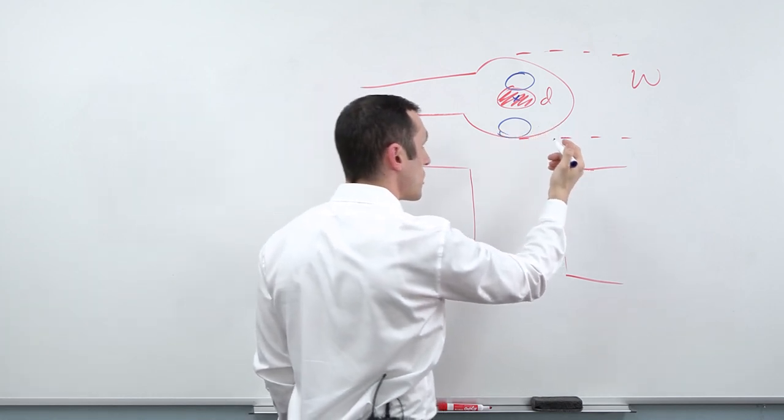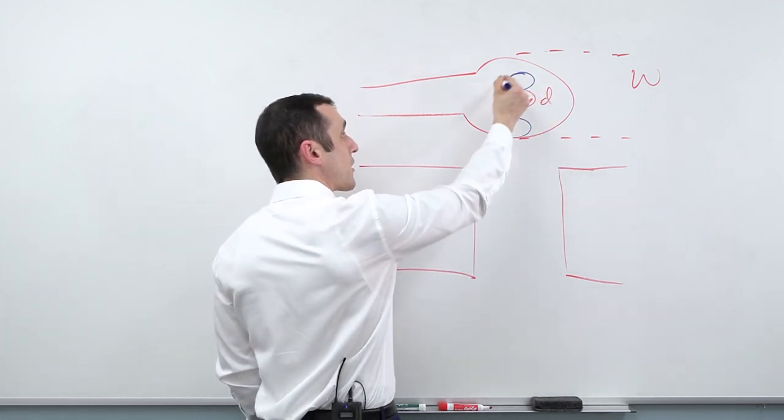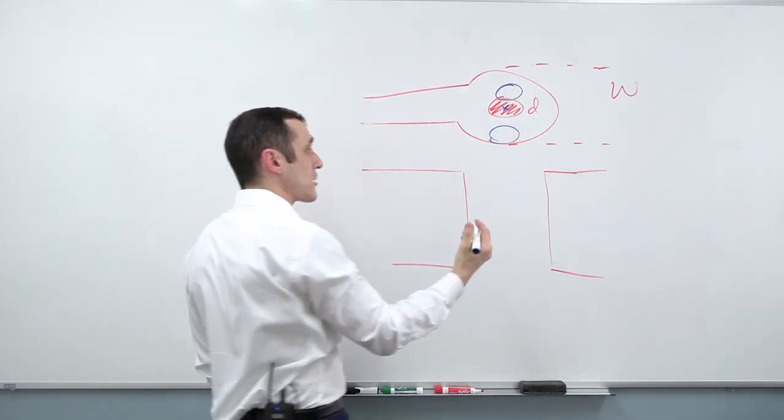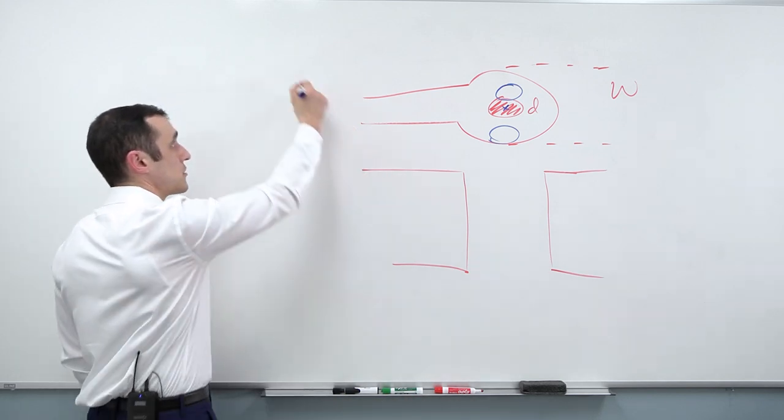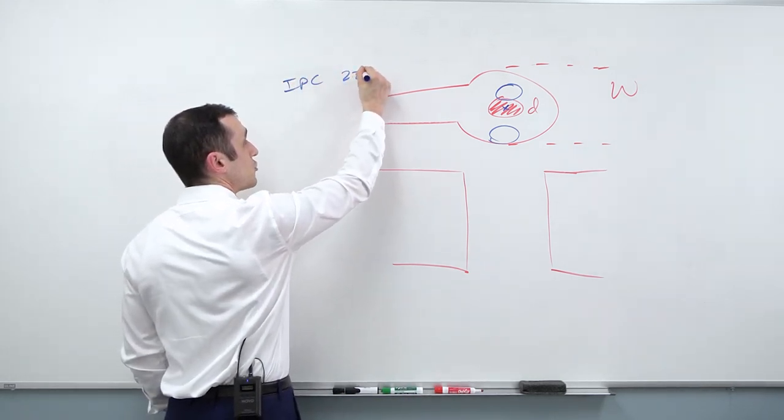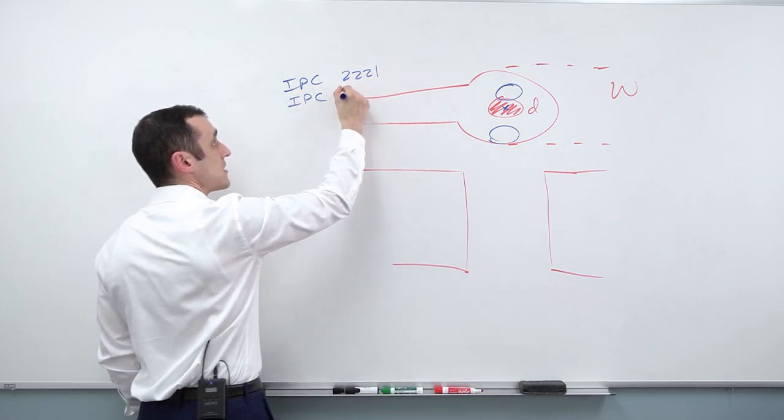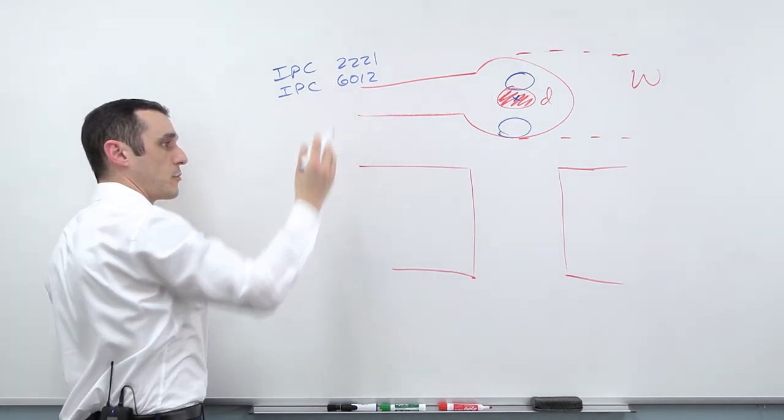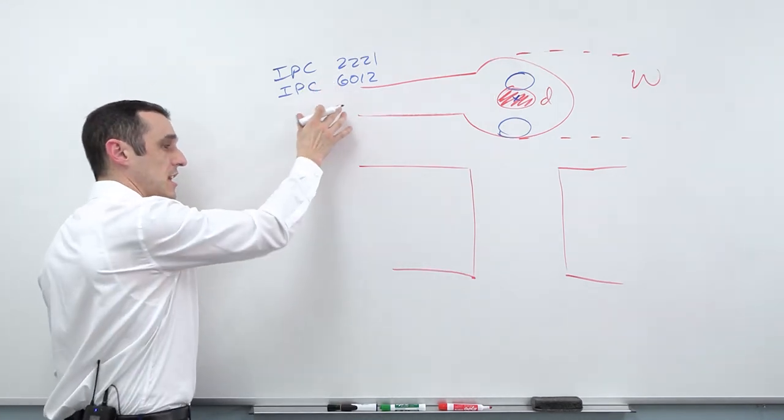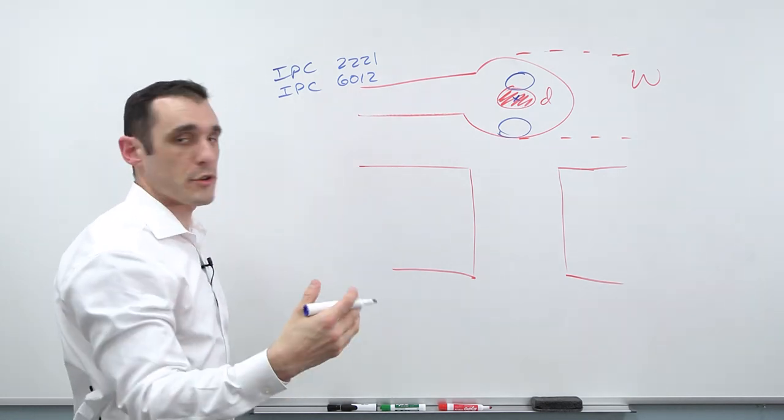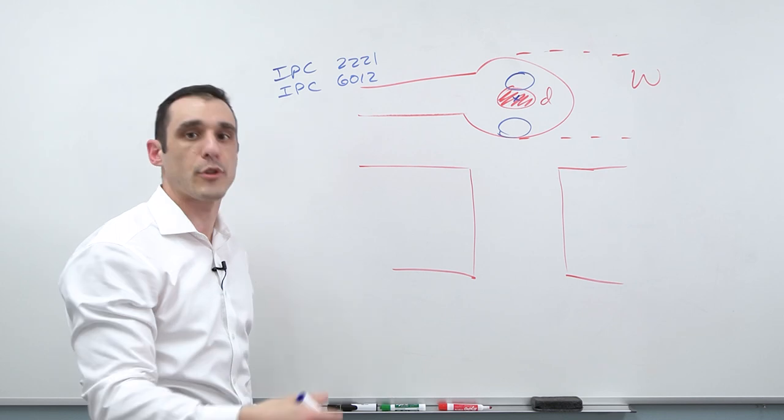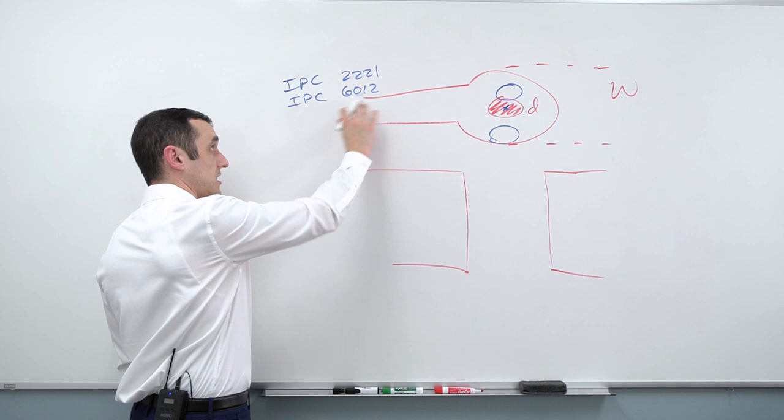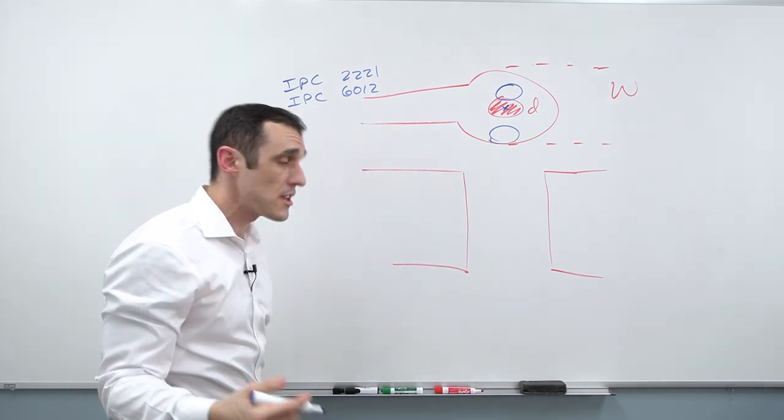One way to size your pads is to accommodate for this drill wander. And so what that does is that ensures that no matter where this drill is most likely to hit, you're always going to have a reliable electrical connection here. So this is actually defined in two IPC standards. Those are IPC 2221 and then IPC 6012. Now, 6012 is derived from 2221. 6012 applies to rigid boards. There are other standards that are related to different kinds of circuit boards. So for example, there's one for high speed boards or high frequency boards that require impedance control, maybe on PTFE based laminates. And there's another related 60XX standard for HDI boards, so on and so forth.